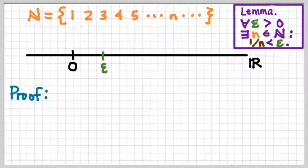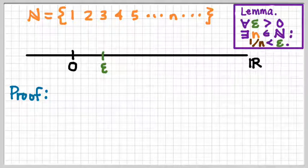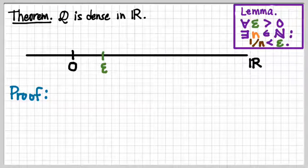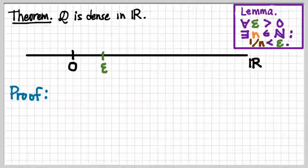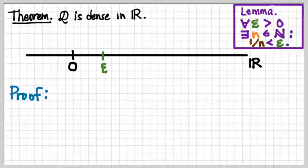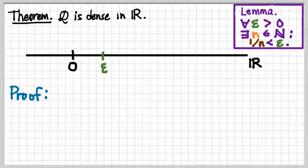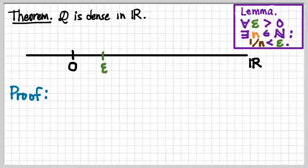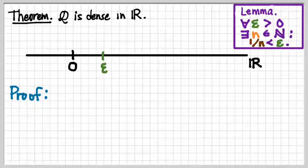To get us started on that process, this is the back-of-a-sugar-packet version of the statement of the density theorem: Q is dense in R. If we unpack that a little bit, just by reminding ourselves what the definition of dense is, how would I say that in a version that maybe doesn't fit on the back of a sugar packet, but which explains a little bit more about what dense actually means?